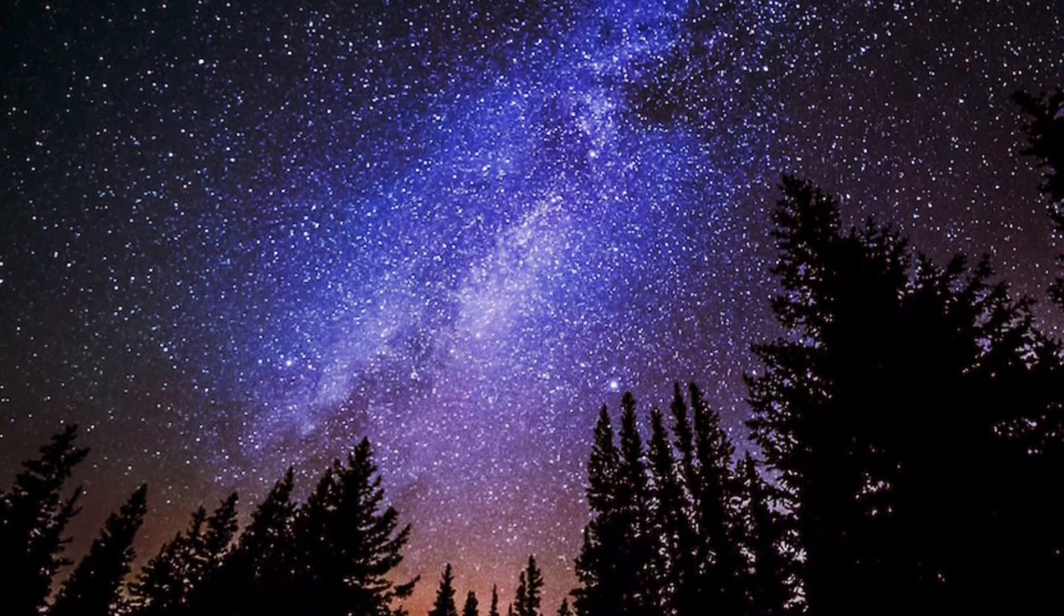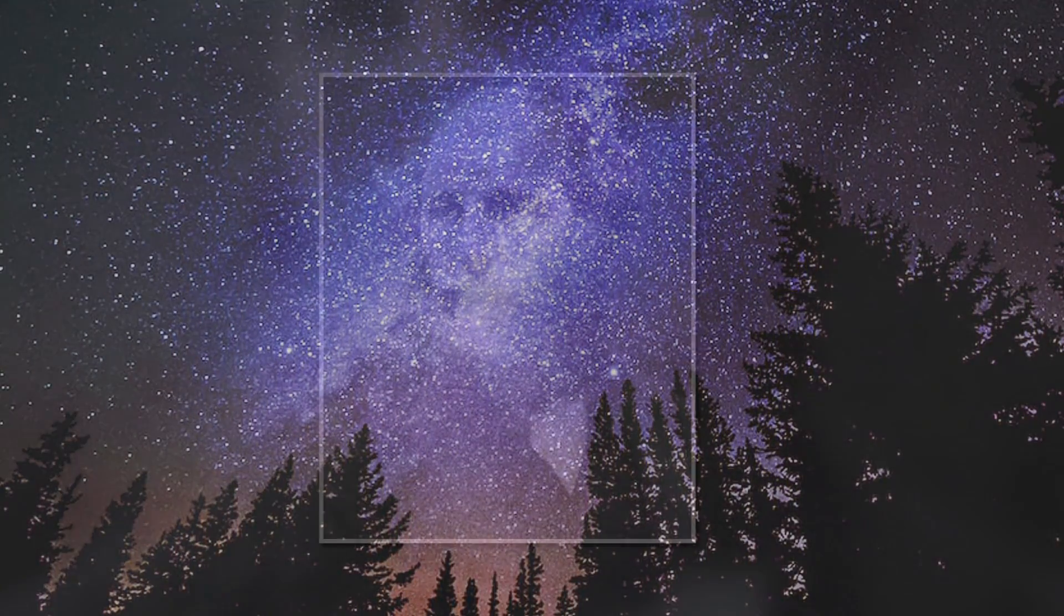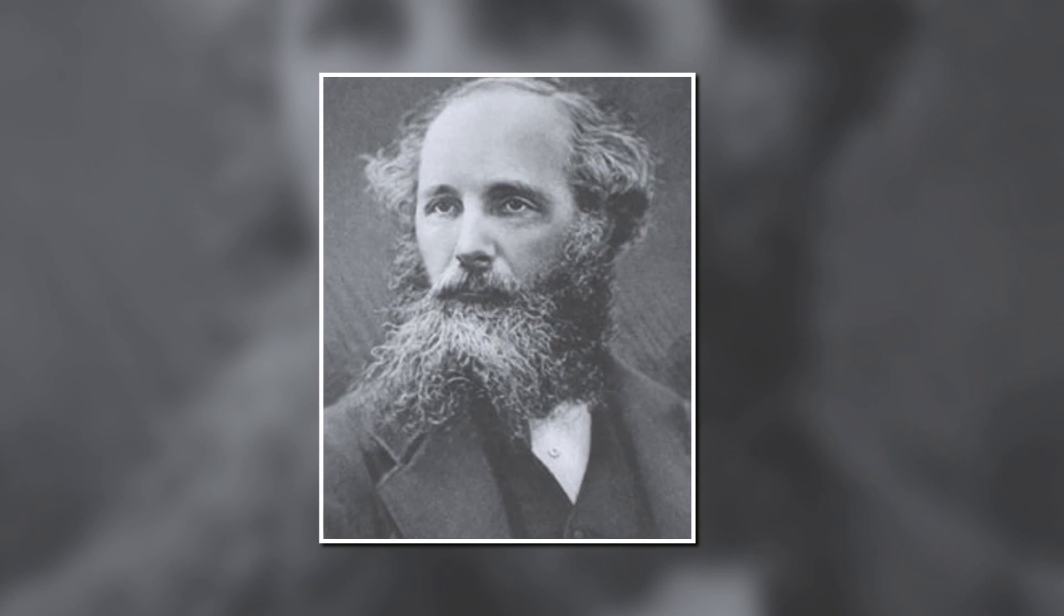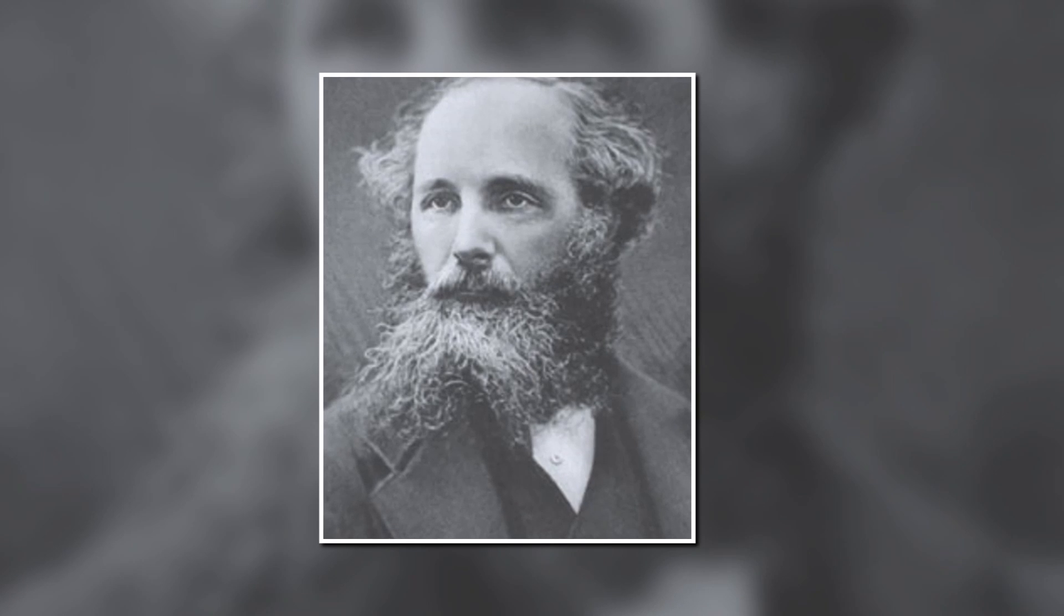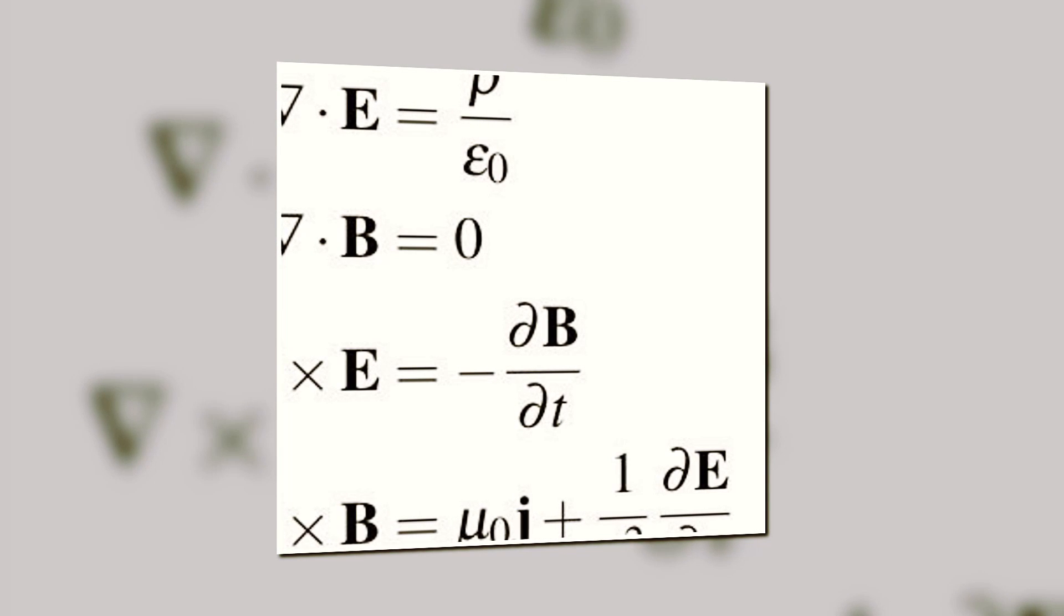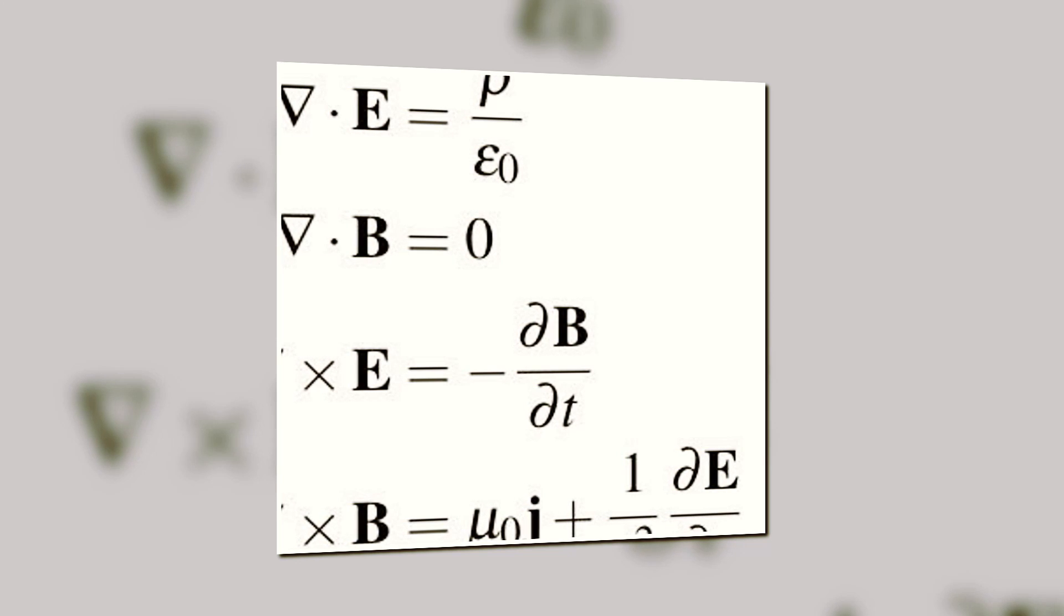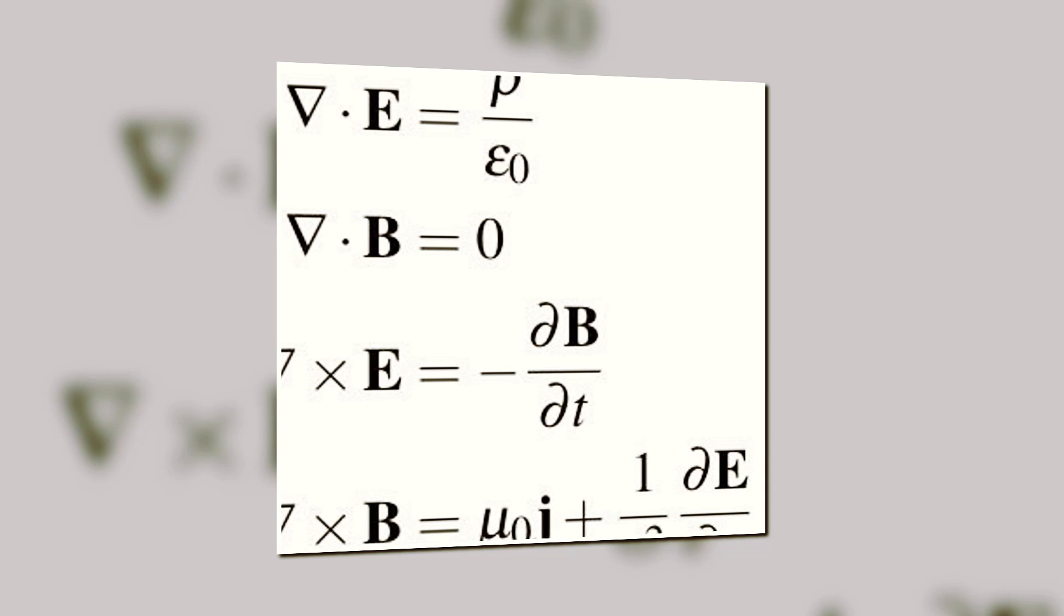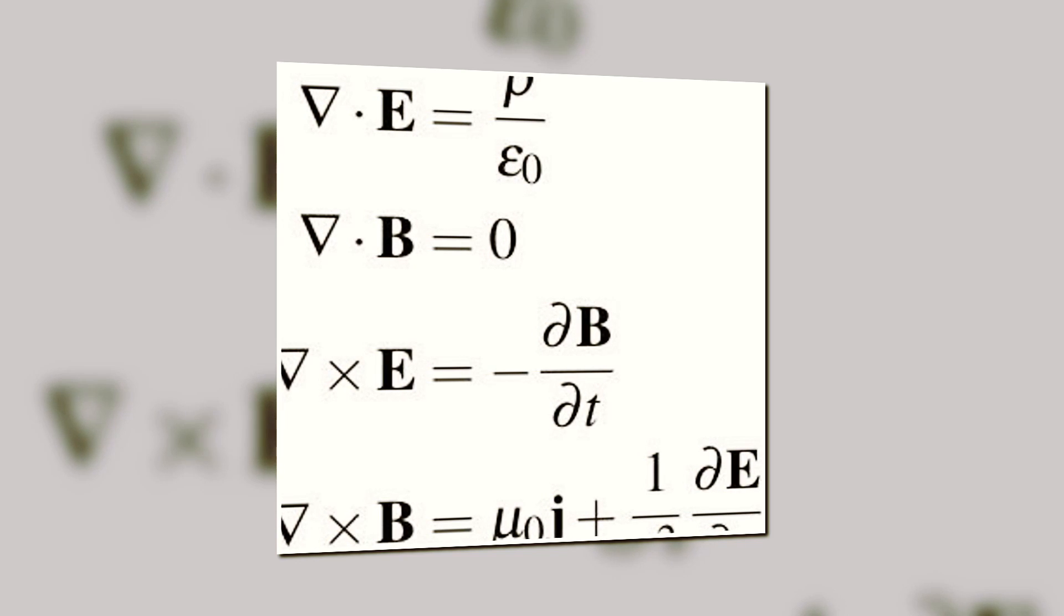One more thing should be mentioned in this context, without which electromagnetism is incomplete: the Maxwell equations. James Clarke Maxwell in the 19th century went on to unify electricity and magnetism by his four sets of equations. He proved that electricity and magnetism are the same force of nature, just expressing itself in different form. After this discovery, electricity and magnetism commonly came to be known as electromagnetism.